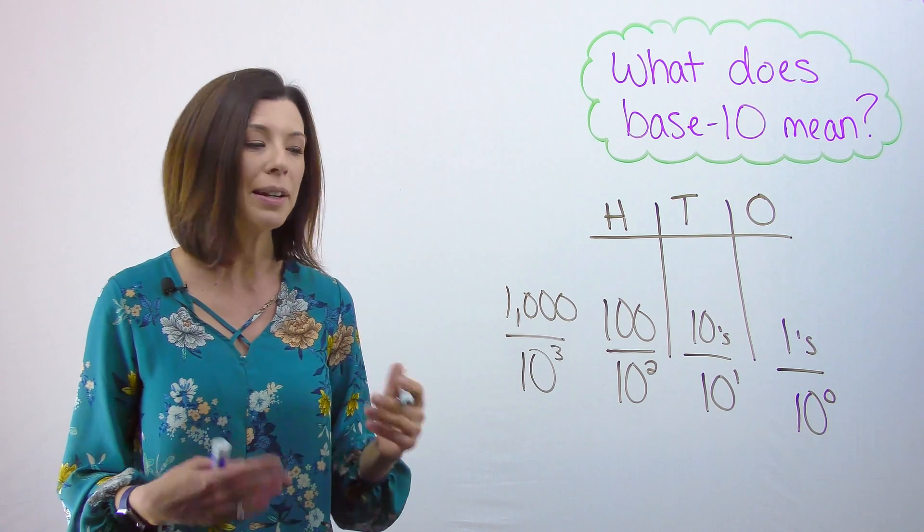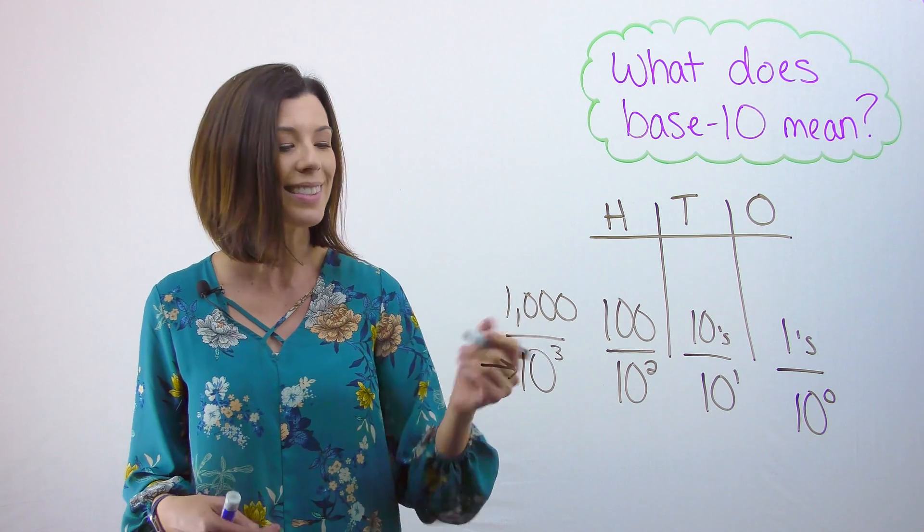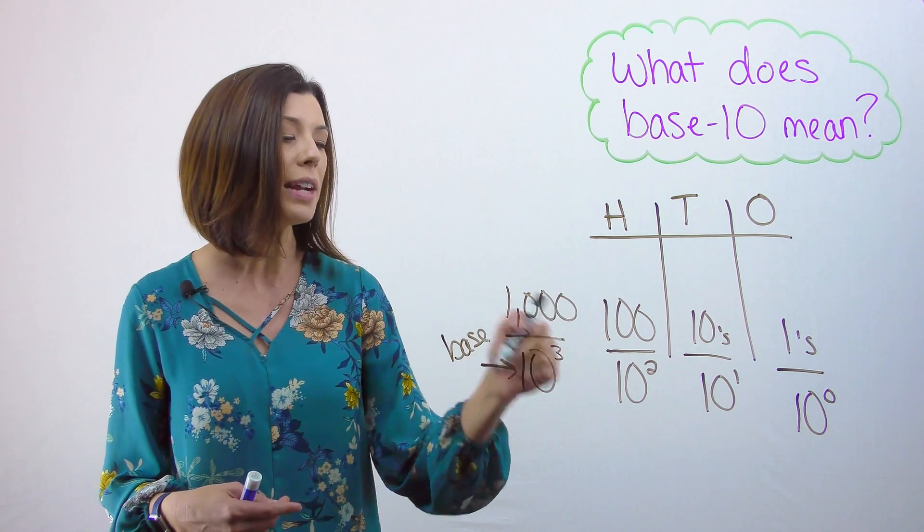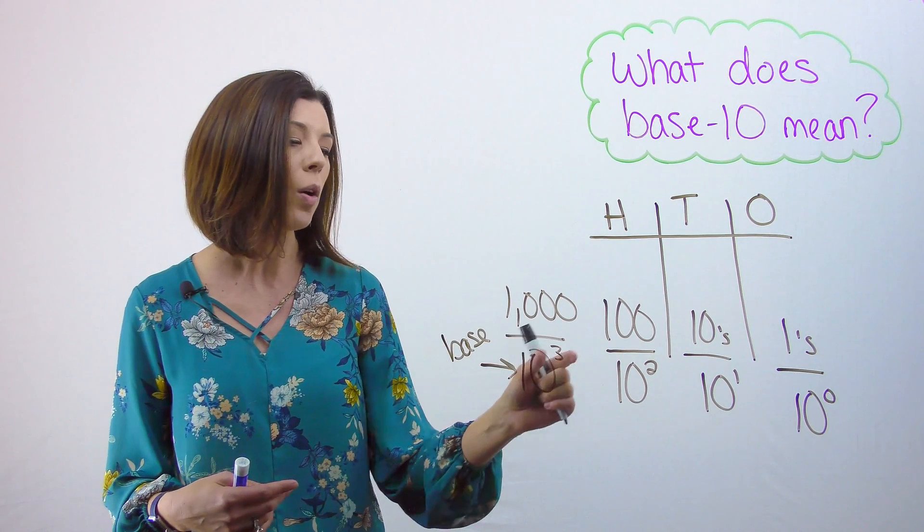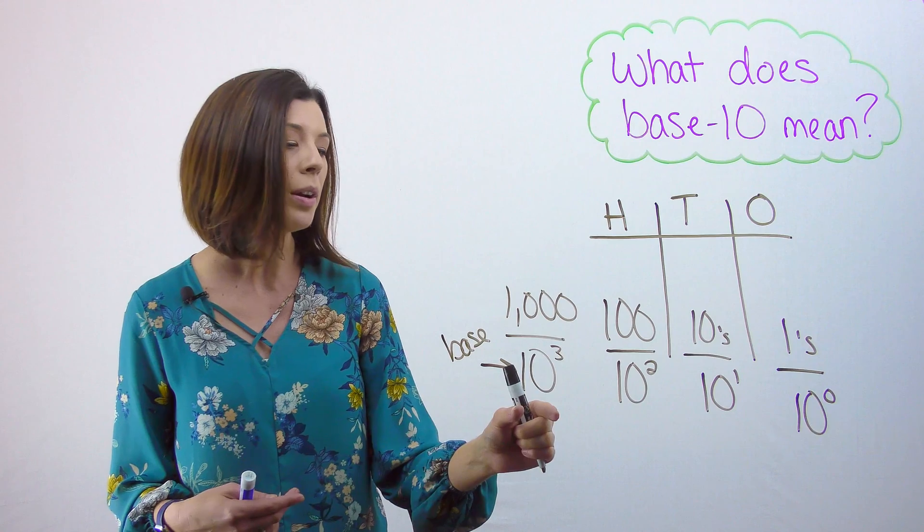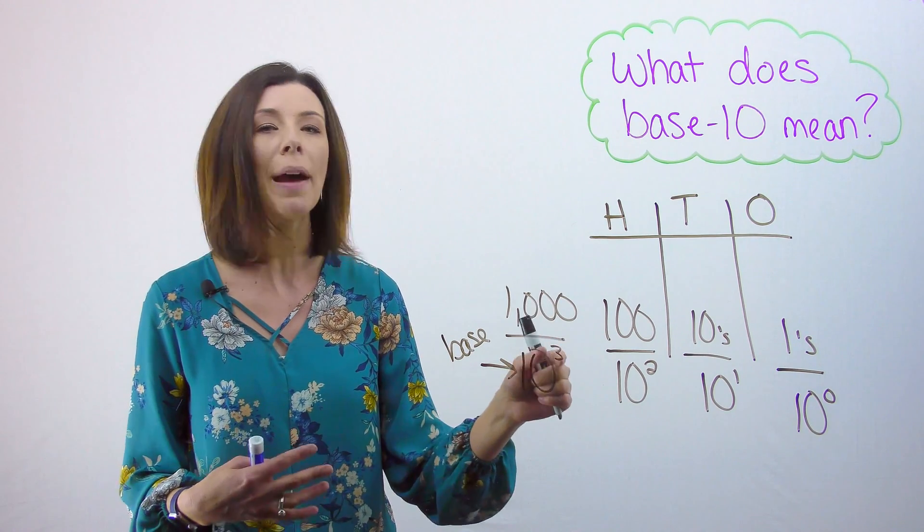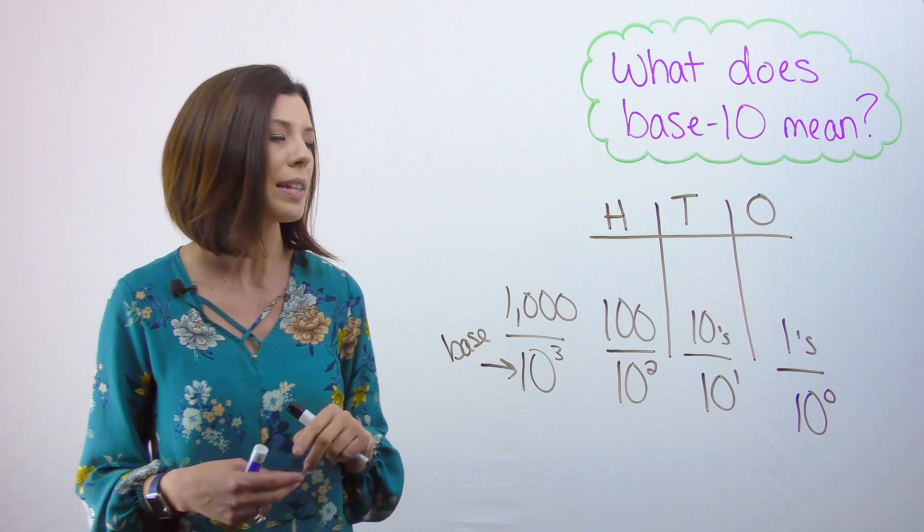If you think back to exponents, you know that that term right there, this 10 piece, that's called the base. We have a base and we have an exponent. So when we talk about base-10, I'm literally talking about what's the base number that we are using to raise to this exponential power that gives me this number. Let me give you another example.